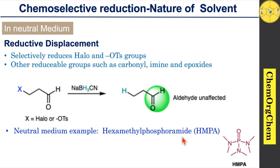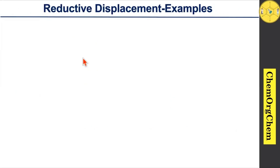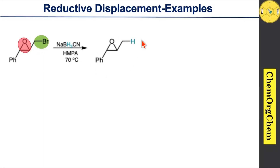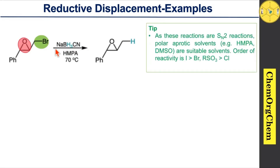This reaction usually proceeds in neutral medium — for example, hexamethyl phosphoramide (HMPA). Consider this example: the compound contains an epoxide ring as well as one bromo group. When you use sodium cyanoborohydride in the presence of neutral solvents, it selectively reduces the bromo group, giving you the corresponding compound. Remember that these reactions are SN2 reactions.